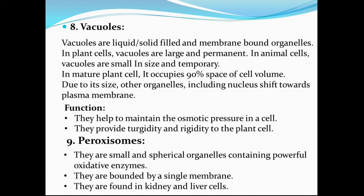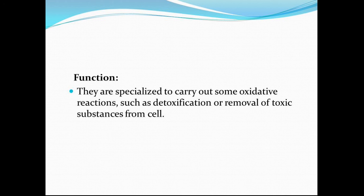Coming on to peroxisomes. These are small and spherical organelles containing powerful oxidative enzymes. These are electron microscopic vesicular structures found in the photosynthetic cells of plants and liver and kidney cells of vertebrates. Each peroxisome contains two types of oxidative enzymes: oxidases and catalases, bounded by a single unit membrane. They are found in kidney and liver cells. Their function is to carry out oxidative functions such as detoxification or removal of toxic substances from the cell.